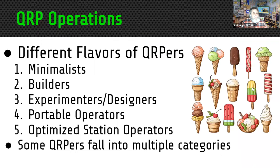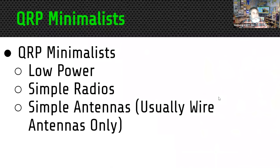There is no one type of QRP operator — they have a bunch of personalities, and some have multiple personalities. I broke it down into five different groups with a lot of crossover: the minimalist, the builders, the experimenters and designers, portable operators, and what I call optimized station operators.